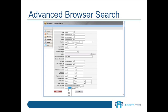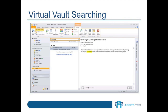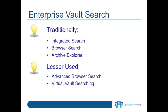Finally, Virtual Vault searching is great, but only searches on the metadata related to archived items, not the full content of the archived items. Those are the traditional and lesser used ways of searching within Enterprise Vault — as you can see, there's a wide variety of ways to search.